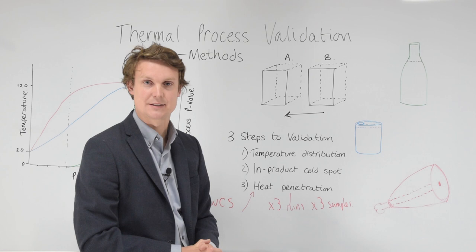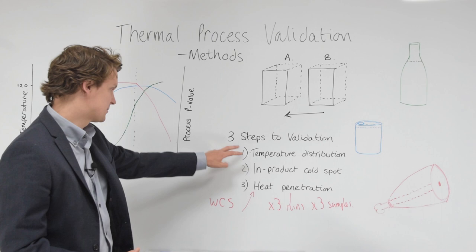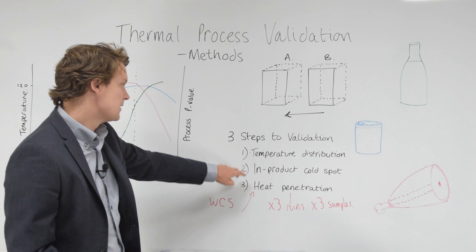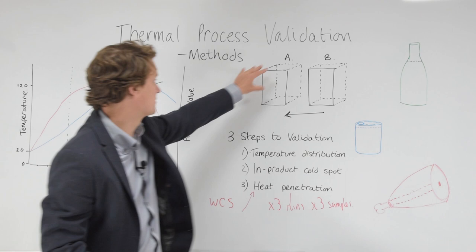When we've understood that, we need then to figure out two more key points before we can do our final validation run number three, the heat penetration. The two key points we still need to understand, which might involve extra testing, are the temperature distribution within the cooking vessel, the retort, and the cold spot within the product.